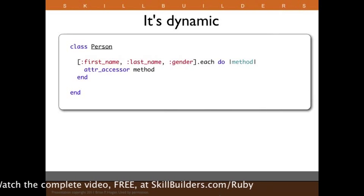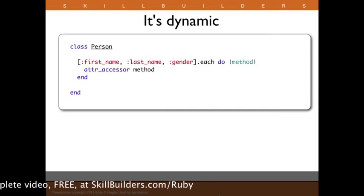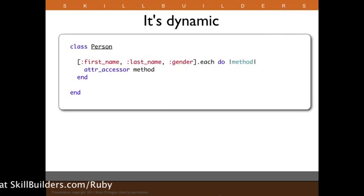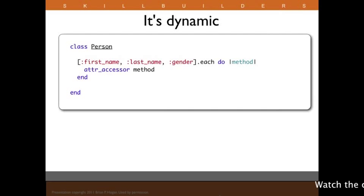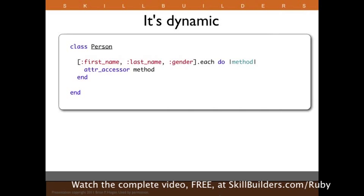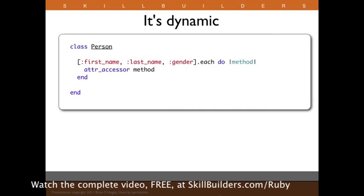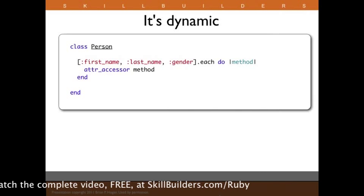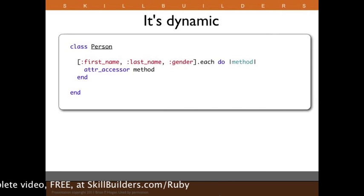One of the other things that's special about Ruby is its dynamic nature. We can use iterations to walk over a collection of things and use methods in Ruby to define methods. This particular pattern actually generates getter and setter methods for `first_name`, `last_name`, and `gender`. If we need to add a middle name, we just add it to our array and it generates the next couple of methods for us. We can use that facility to basically write code that writes code.